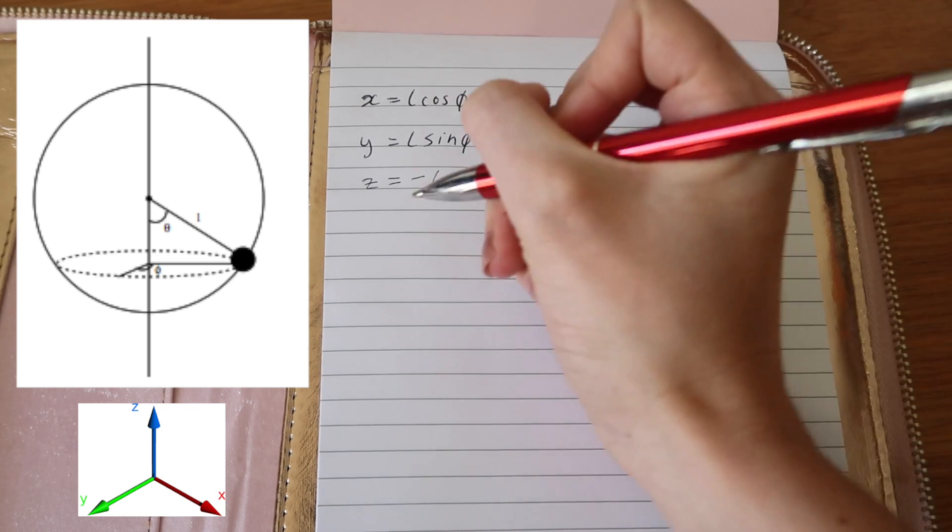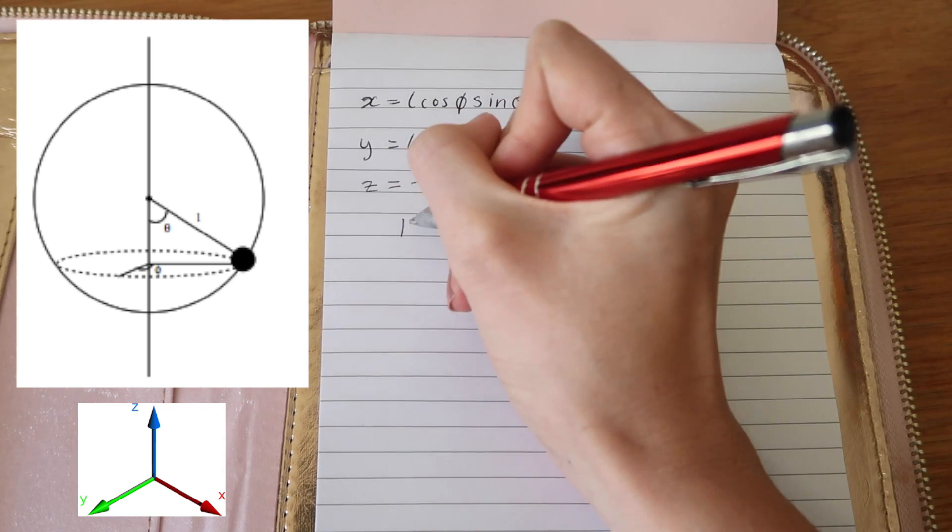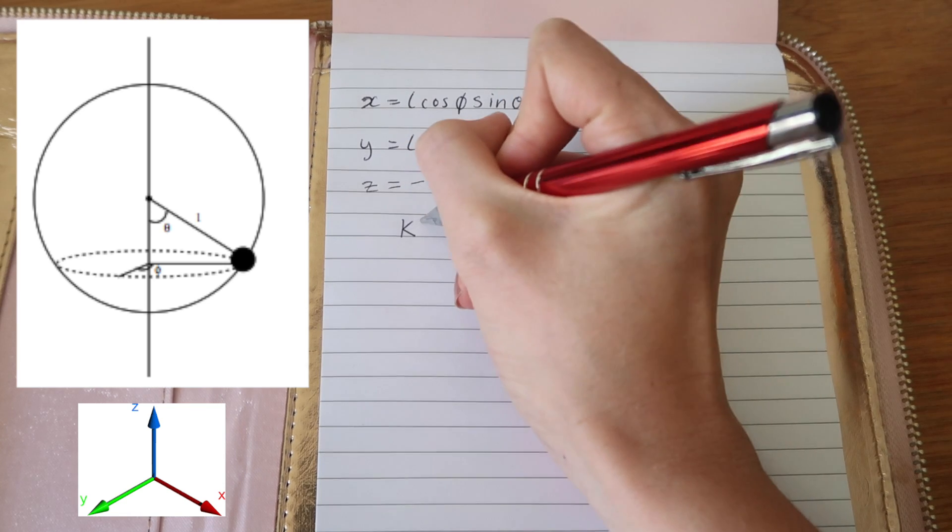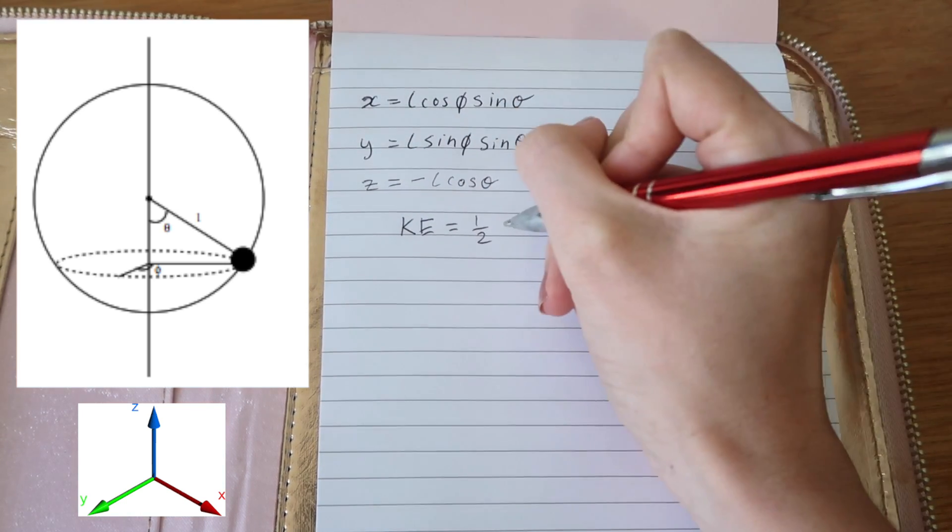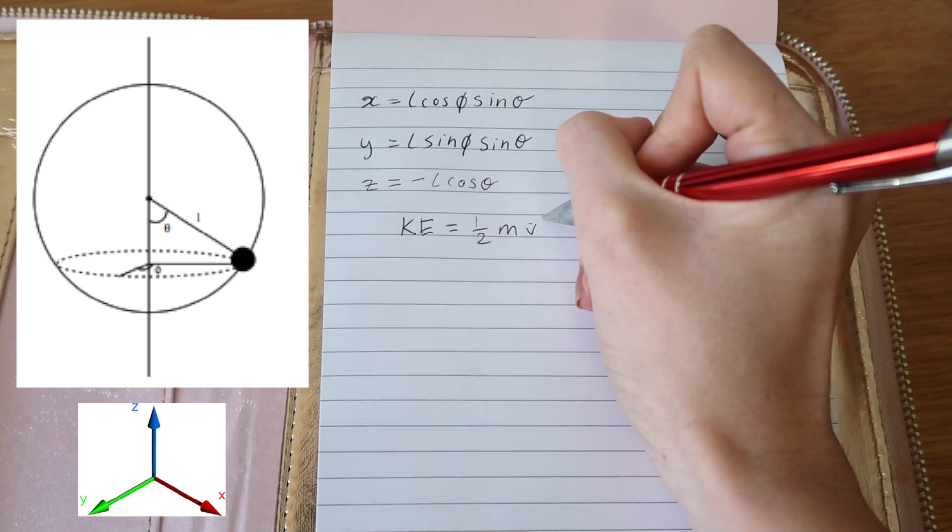In a problem like this we might be asked to find the equation of motion through Lagrangian mechanics. The first step in doing that is to find the kinetic energy of the system.